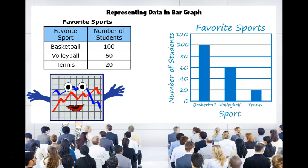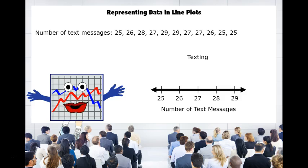Line plots are next. Here we're looking at a list of number of text messages. First we want to use a number line that has those values on it and make sure we label and include a title. Next we want to place an X on the number line for each value in the list.